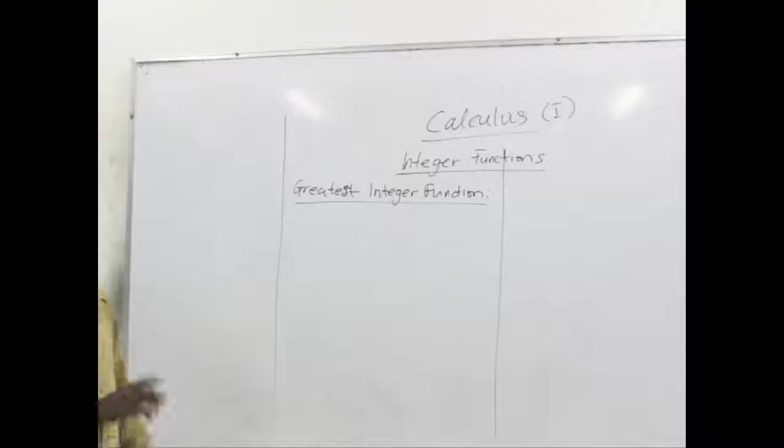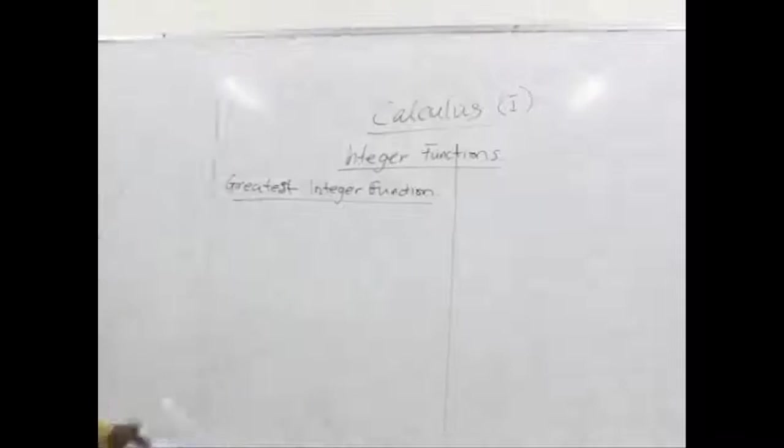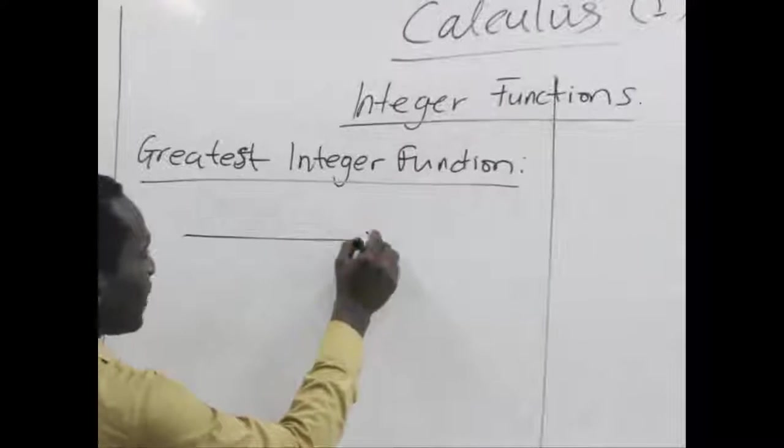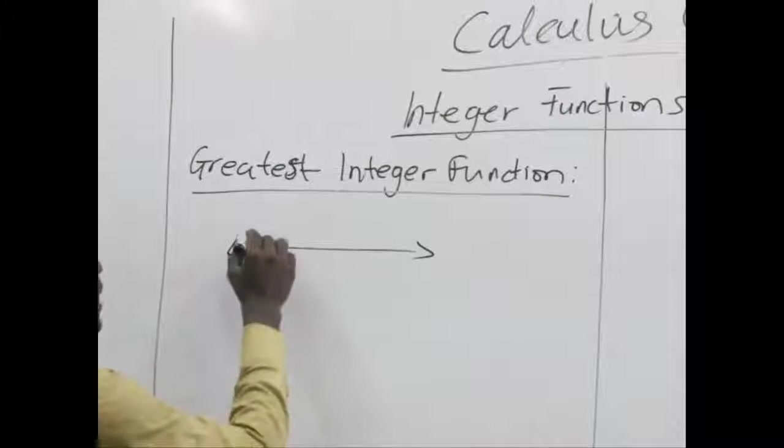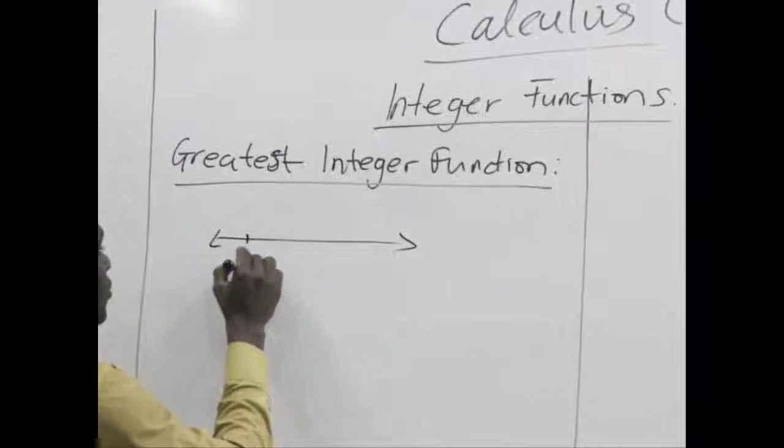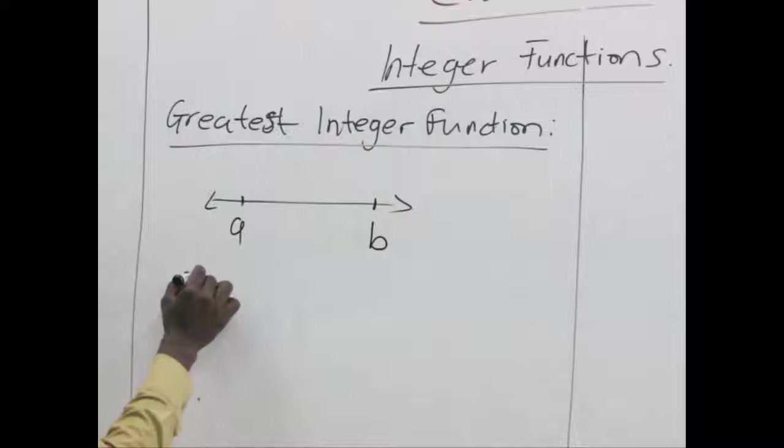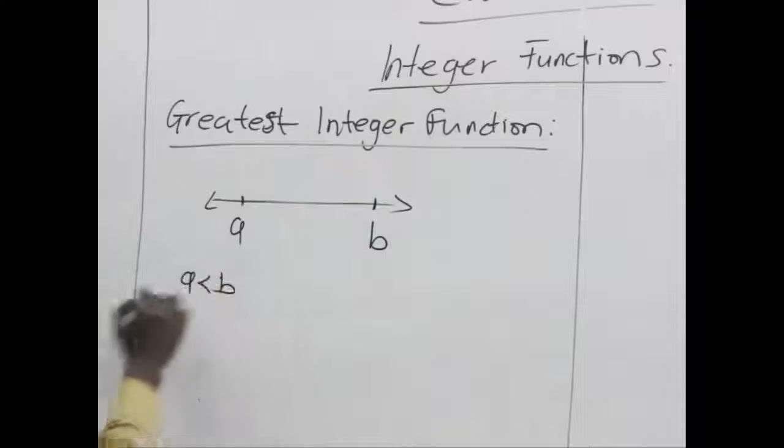Now let's take an illustration to explain what we mean by a greatest integer function. Assuming we have a number line, a short number line here. Let's say we have a value which is a here and a value which is b here. Whereby a is lesser than b.